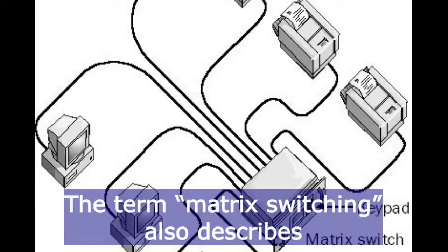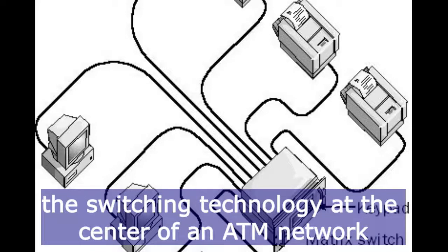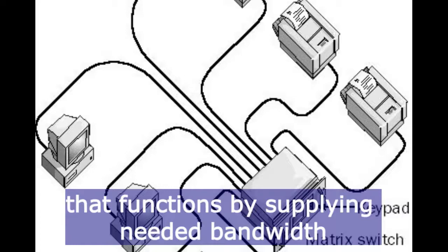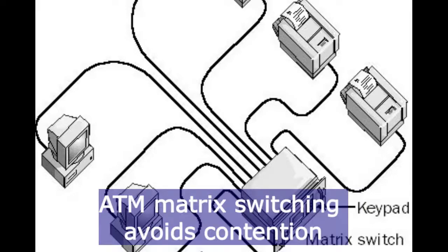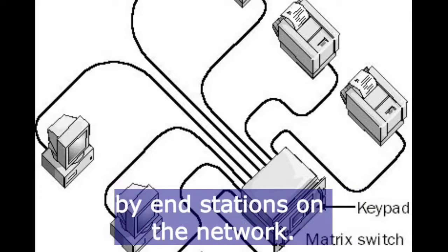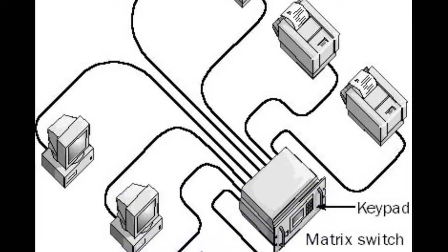The term matrix switching also describes the switching technology at the center of an asynchronous transfer mode network that functions by supplying needed bandwidth for end-to-end sessions. ATM matrix switching avoids contention by end-stations on the network.